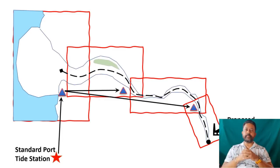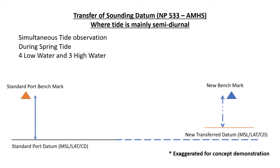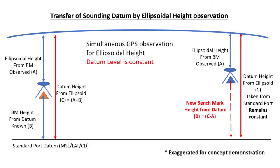So once you have set up your benchmark inside the river, you can transfer the datum the same way we have discussed earlier. You can use Admiralty NP-533 form to transfer the sounding datum or you can use the DGNSS ellipsoidal height transfer method.